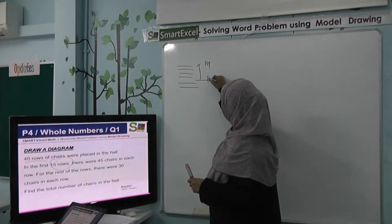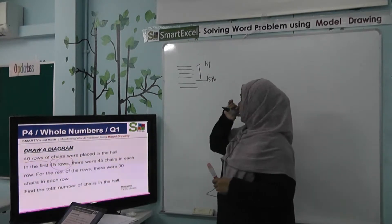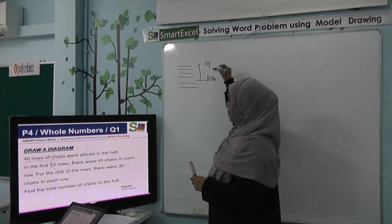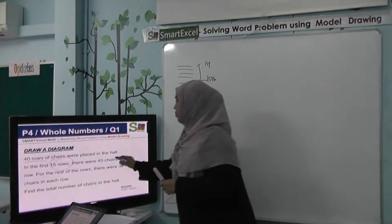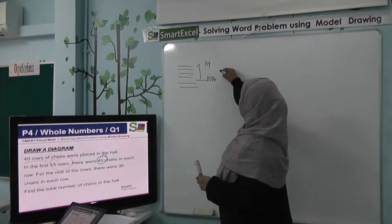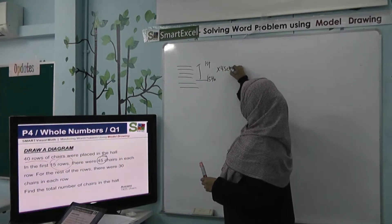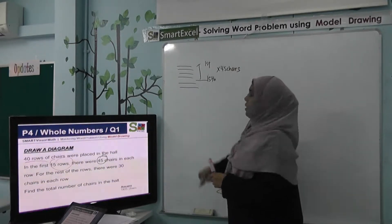This is your first row, this is your 15th row. So this one will occupy per row, they have 45 chairs. So we multiply by 45 chairs.